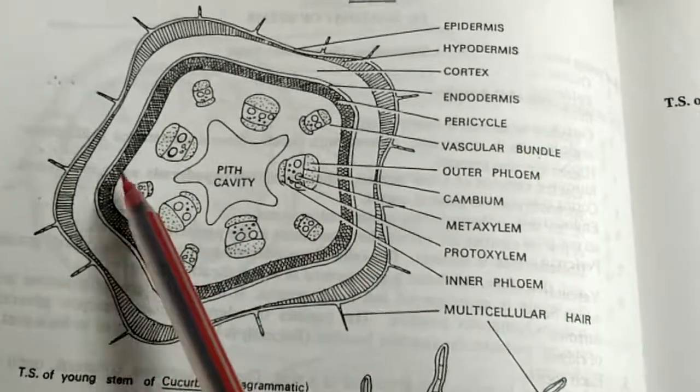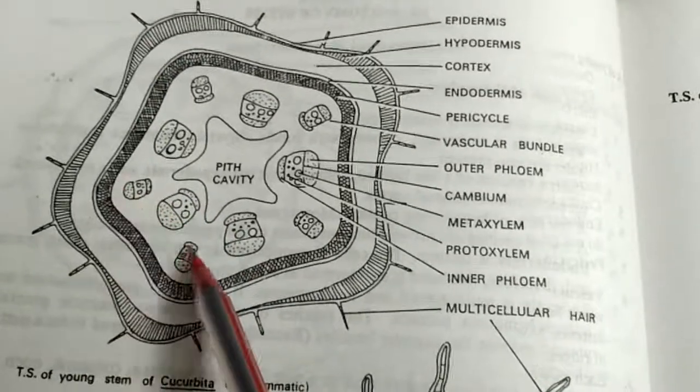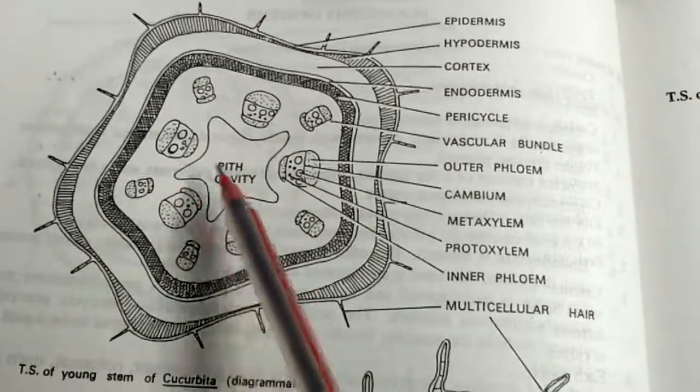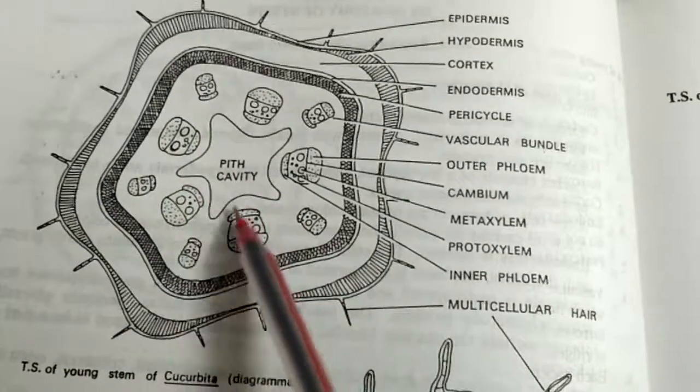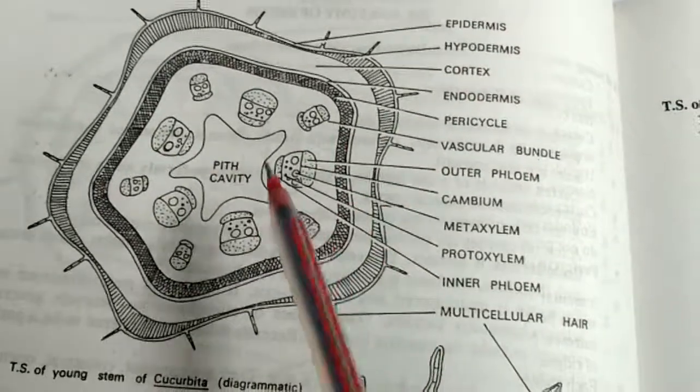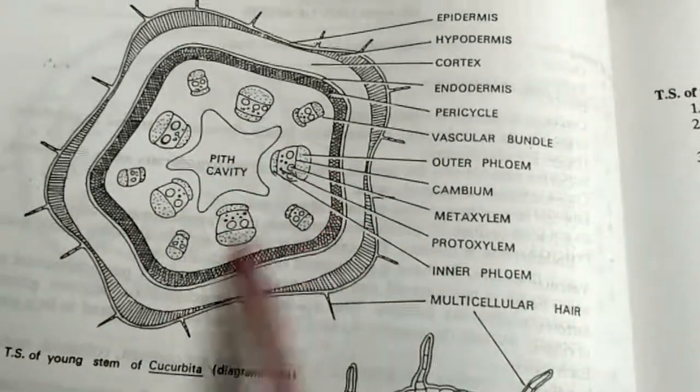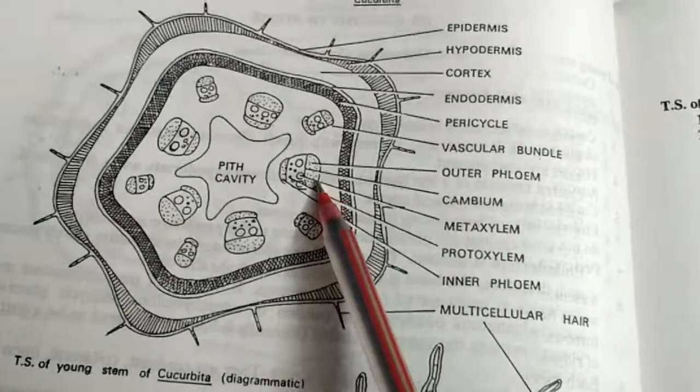Two types of rings are present. The outer ones are very very small as you can see, and the inner ones which are towards the center or facing the pith region, these are very large in shape. So as you can see the structure, the arrangement - this is the outer phloem.